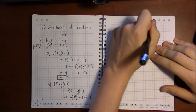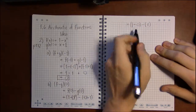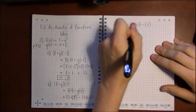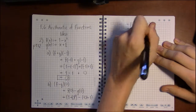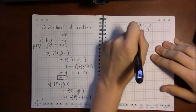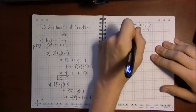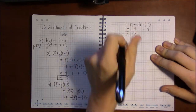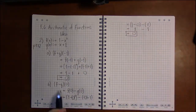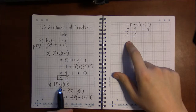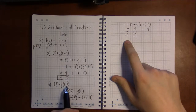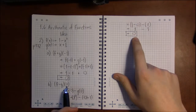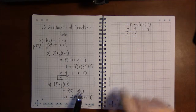0 squared is just 0, so this is 1 minus 0, minus (0 plus 1), which gives us 1 minus 1, which is 0. So f minus g evaluated at x equals 0 gives us a y value of 0.